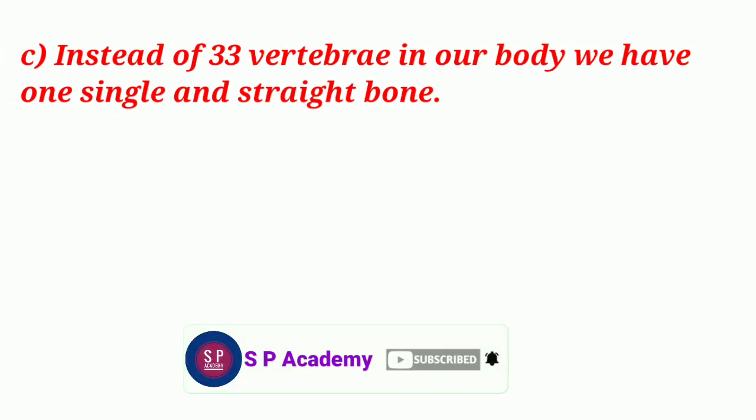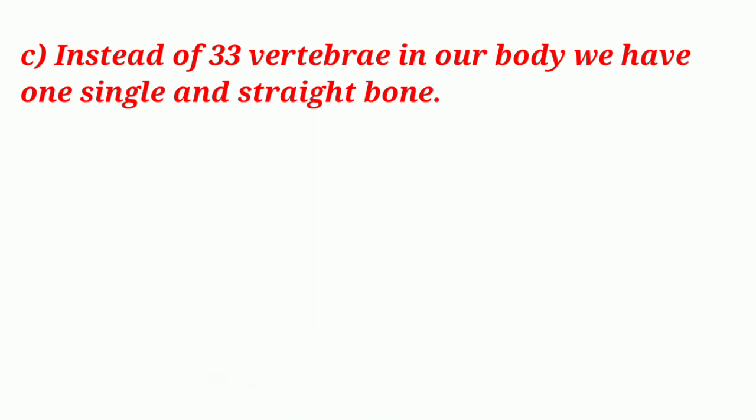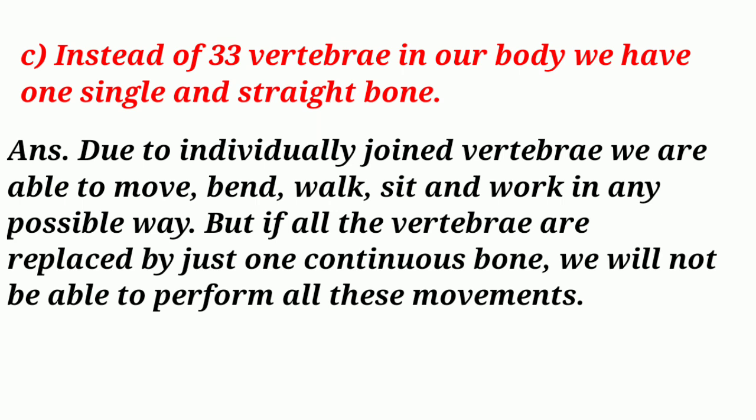Question 6c: What will happen if instead of 33 vertebrae in our body, we have one single and straight bone? Answer: Due to individually joined vertebrae, we are able to move, bend, walk, sit and work in any possible way. But if all the vertebrae are replaced by just one continuous bone, we will not be able to perform all these movements.